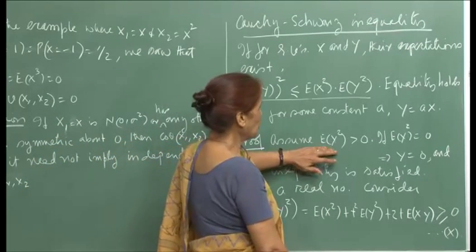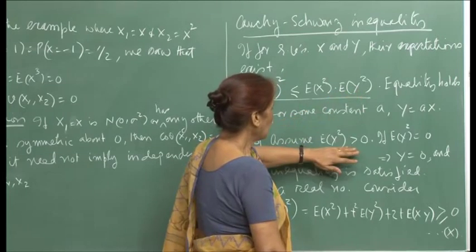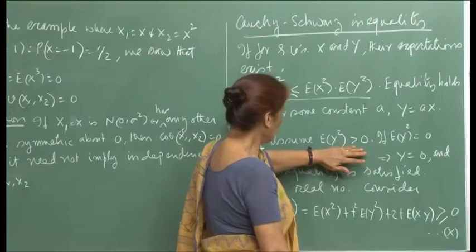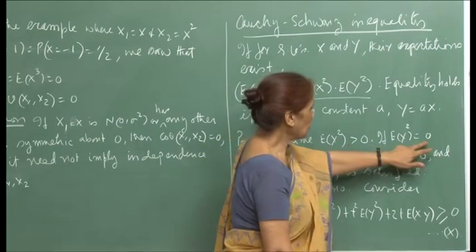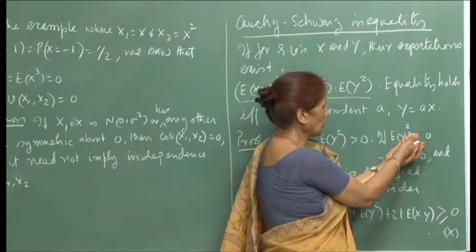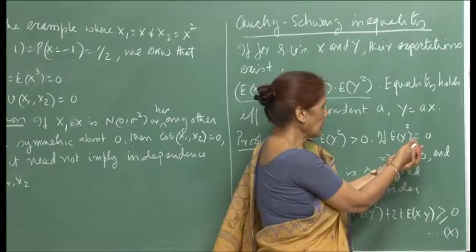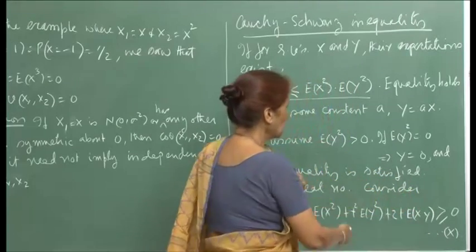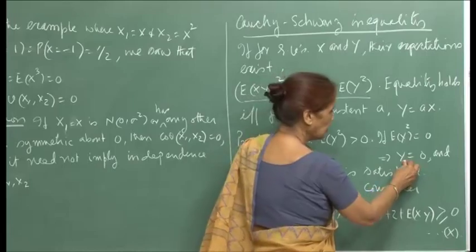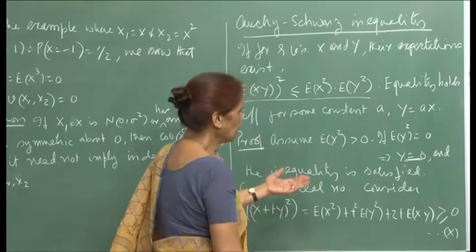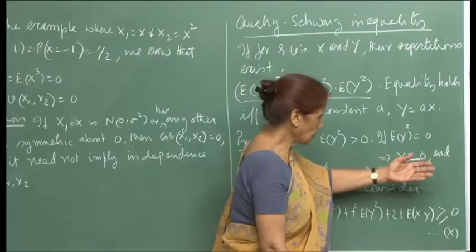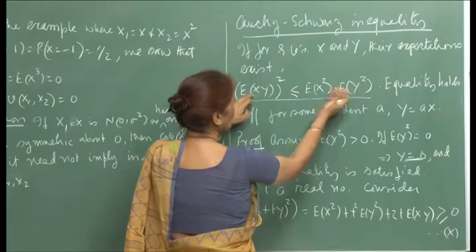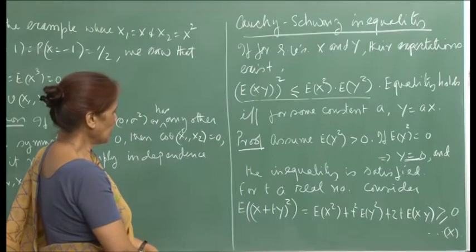We assume E(Y²) > 0 because Y² is a positive-valued random variable. Its expectation is a positive sum, so it cannot be 0 unless Y is identically 0. If E(Y²) = 0, it implies Y = 0, and the inequality becomes 0 ≤ 0, satisfied as equality. So there is no loss of generality in assuming E(Y²) > 0.